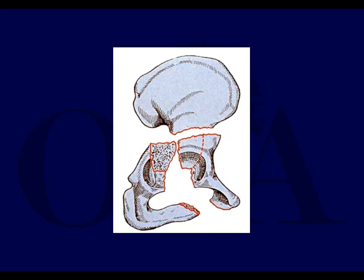On the obturator oblique view, the spur sign is represented by this piece of bone. This is the associated both column fracture — there are many fracture variants, but essentially no articular pieces are attached to the sciatic buttress back here. They're all free floating, and oftentimes the head is sitting in a medialized position.